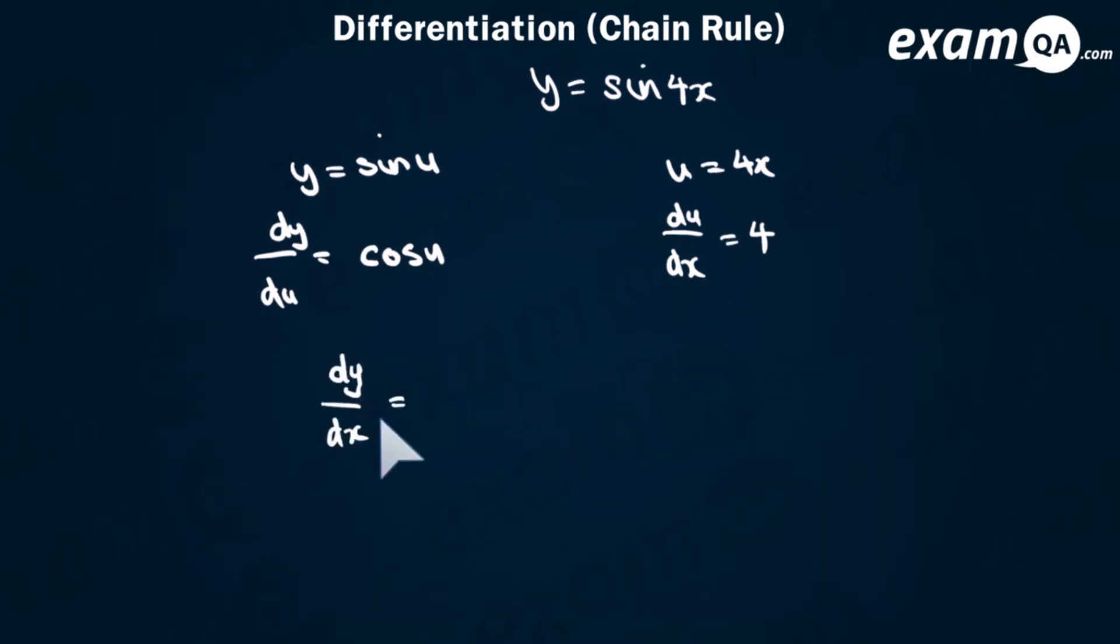So it's cos u times 4, which we can write as 4 cos u. Now you don't want u in your answer so you can replace u with 4x. And so we've managed to differentiate y equals sine 4x.